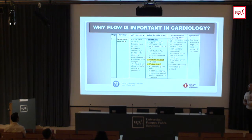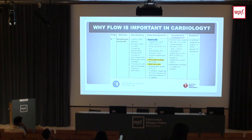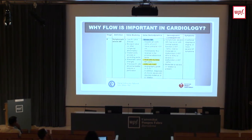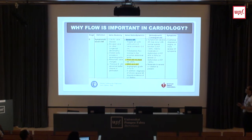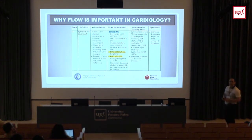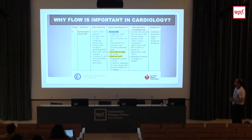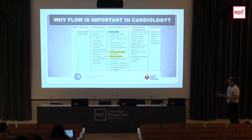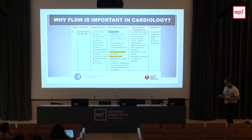The first question we should answer is: why is flow imaging important in cardiology? Why do we need flow? When we are trying to evaluate the severity of a valvular regurgitation or a valvular stenosis, most of the criteria for quantification are based on clinical flow. For example, we consider a severe aortic regurgitation when there is a regurgitant volume greater than 60 milliliters per beat, or the orifice of regurgitation is higher than 0.3 centimeters squared.